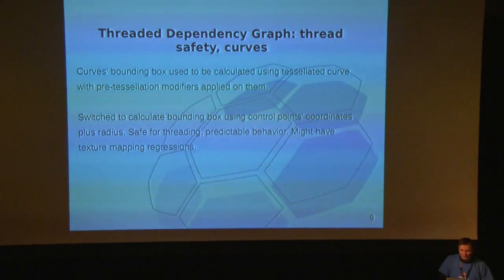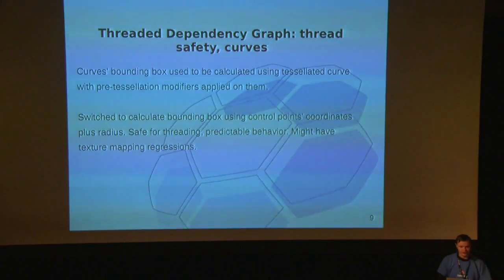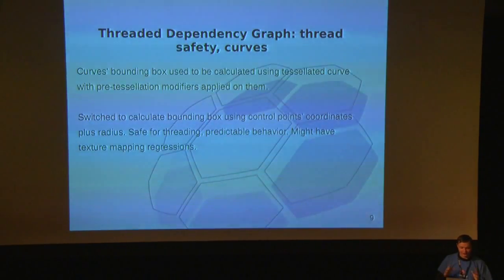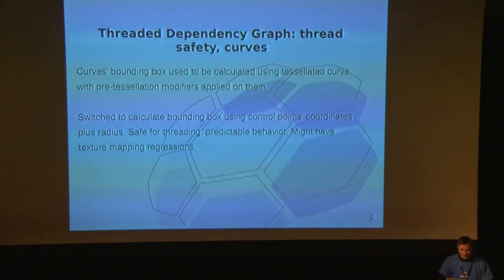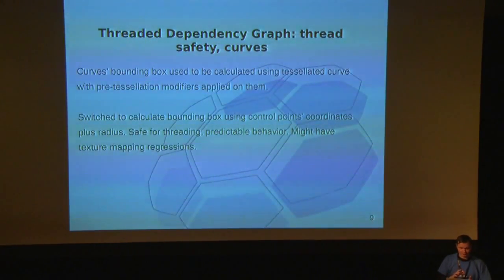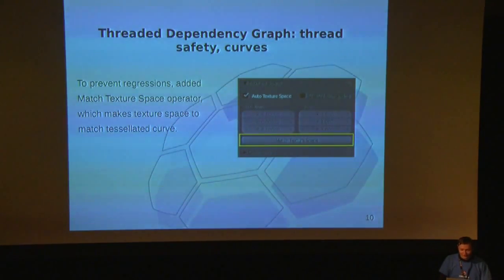Curves deserve a bit more explanation because it wasn't possible to make them thread-safe without breaking compatibility. This is because of texture space, which relied on tessellated curves. Texture space is an object data block property, and tessellation is an object property — so it's like screwing up parent ownership the other way around. Currently in my branch, which is going to be merged pretty soon into trunk, we changed it so texture space is based on control point positions and their radius. It might break some files, but there is a button to match texture space to the tessellated curve as a workaround.